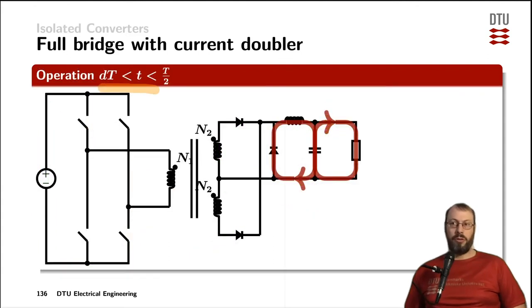During the first off-time of both switches, we have the exact same freewheeling operation in a full-bridge converter, as we know already from the half-bridge converter.